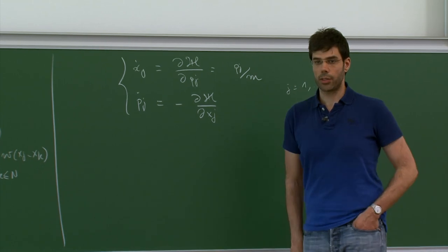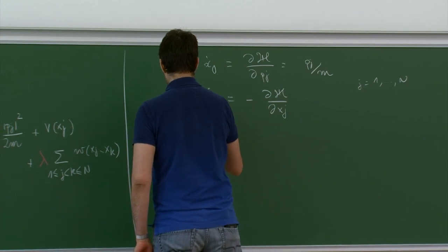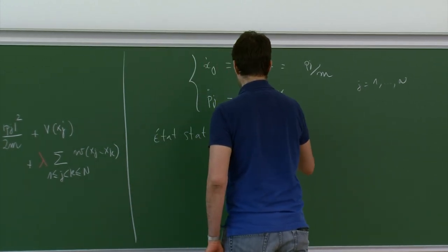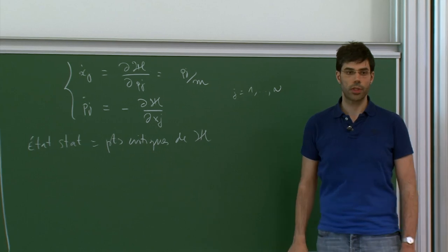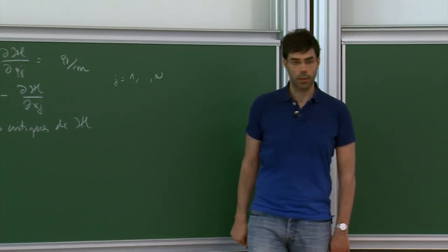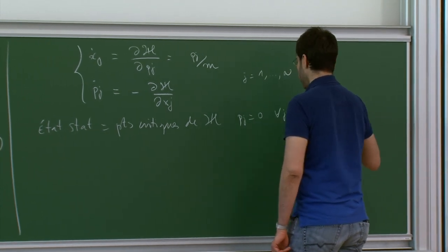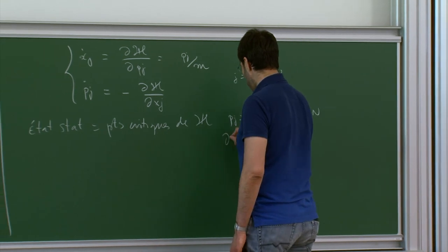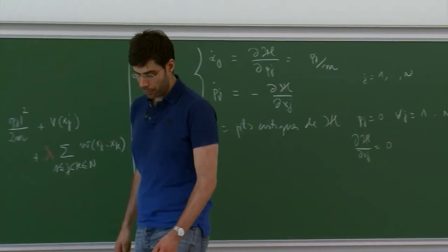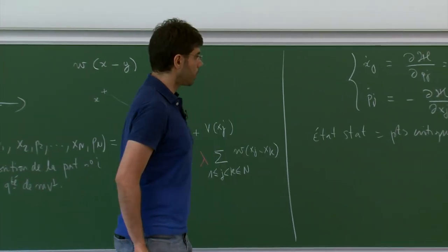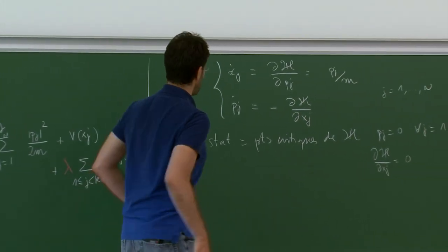These critical points of H all have zero momentum P_j = 0 for all j. Moreover, the gradient with respect to X_j must also be zero. A privileged stationary point is the one of minimum energy, which will be the most stable. This is just Newton's equations. Now we want to study the same problem but for quantum particles.